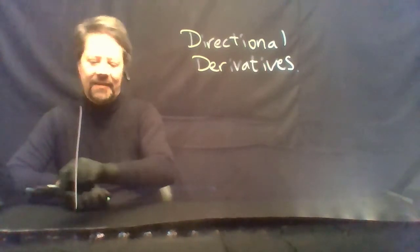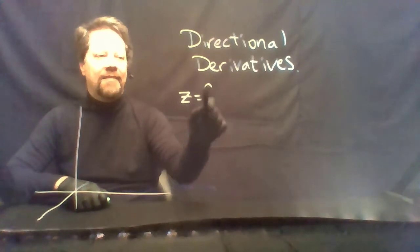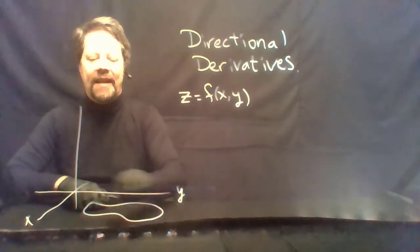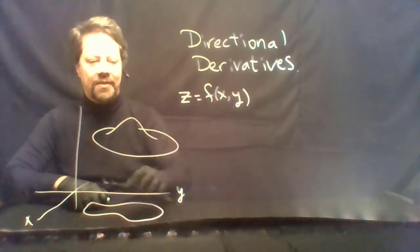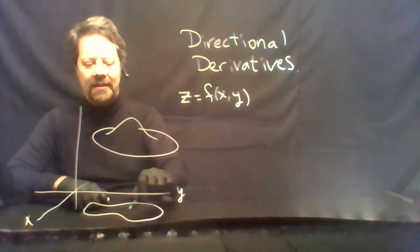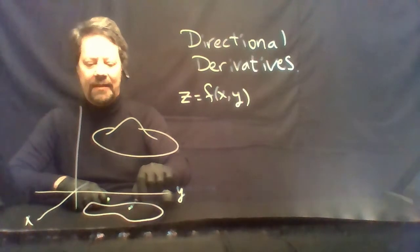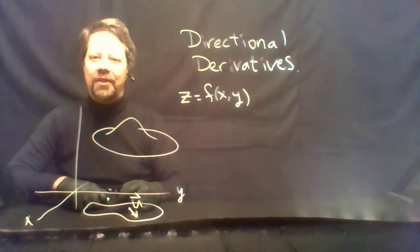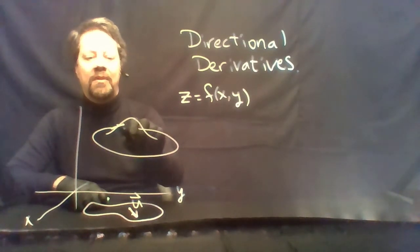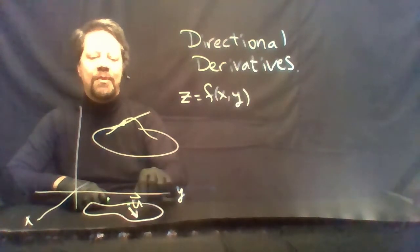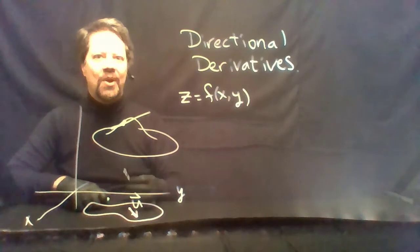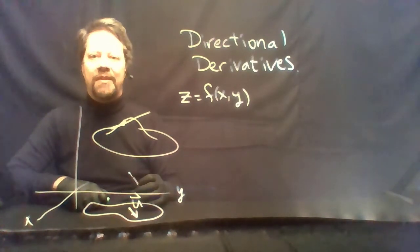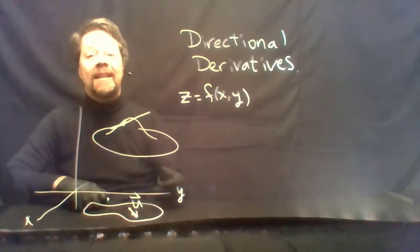The idea is as follows. Suppose you have some function z which is a function of x and y. On some domain you end up with a surface. If you're at some point and you want to know the slope as you move in a particular direction u — we will insist that the vector u be a unit vector — we'll investigate what is the slope of the tangent line as you move in that direction. We are no longer requiring that direction be parallel to the x-axis or to the y-axis. Those were partial derivatives. Now we're going to allow the change to occur in any direction.